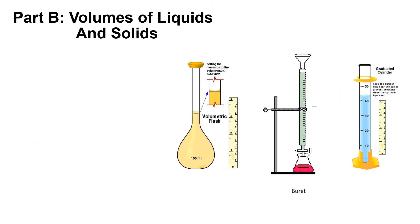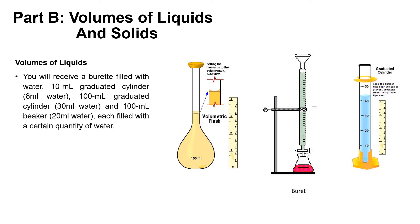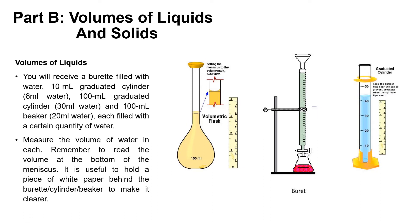Next is Part B: volumes of liquid and solids. You will receive a burette filled with water. For the 10 ml graduated cylinder, take 8 ml of water; for the 100 ml graduated cylinder, take 30 ml of water; and for the 100 ml beaker, take 20 ml of water. Measure the volume of water in each device. Remember to read the volume at the bottom of the meniscus. It is useful to hold a piece of white paper behind the burette, cylinder, or beaker to make the reading clearer.